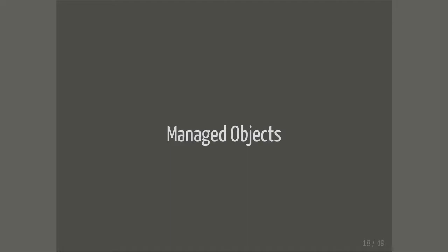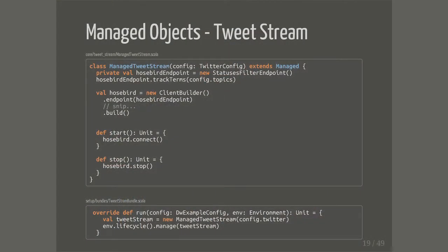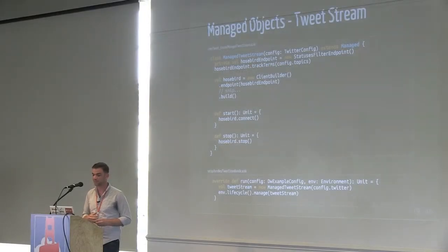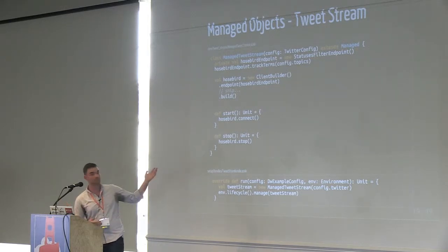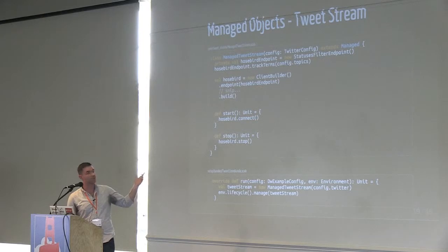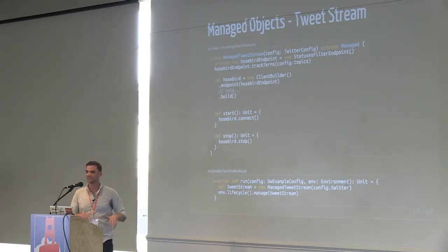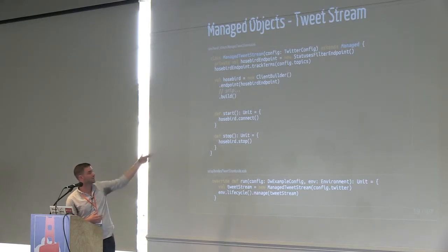Managed objects are basically — with most services your service starts up, you need to call start on a bunch of things, wait for things to connect, and then when you shut down you need to safely shut down. Managed objects are just simple little classes that have start and stop, and you register them with the lifecycle of your environment in your application. In my sample application, I'm reading from Twitter, listening to a Twitter stream, and ultimately indexing it into Elasticsearch. This is all I need to do to initialize HoseBird for reading from Twitter — have my client builder, say connect, say stop, done.